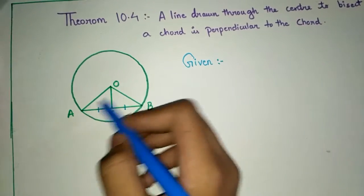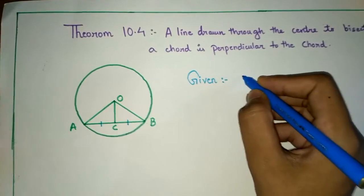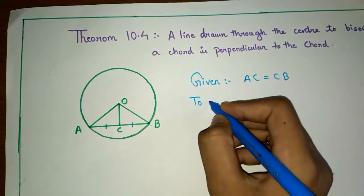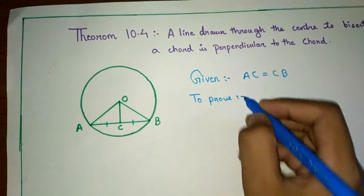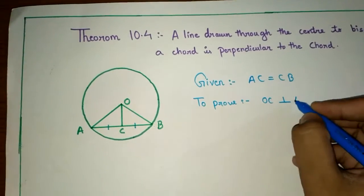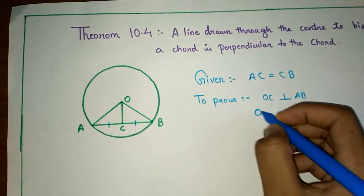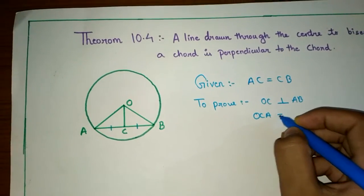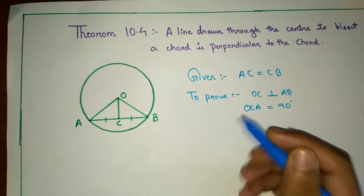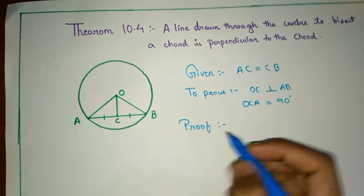We are given that SC equals CB, OC is a line, and OA and OB are the radius. So first I will write what is given: SC is equal to CB. And to prove: OC is perpendicular to AB, or OCA is equal to 90 degrees, or OCB is equal to 90 degrees — these are all the same.